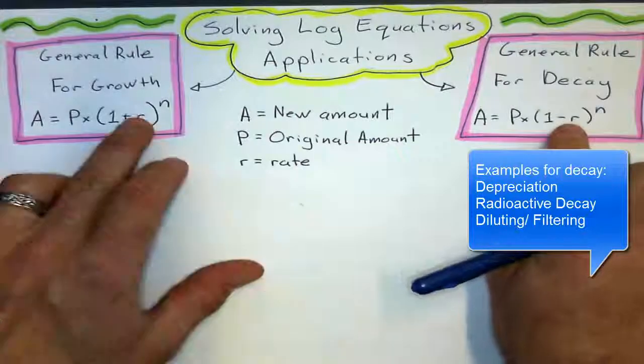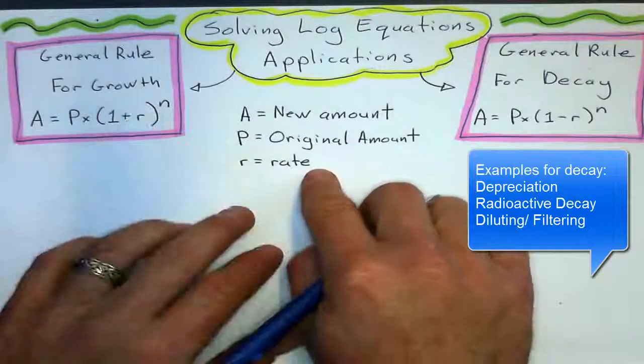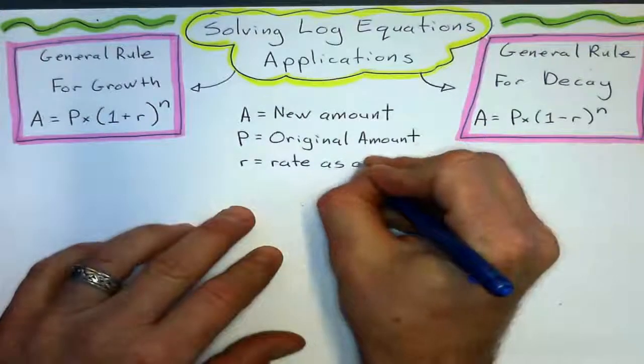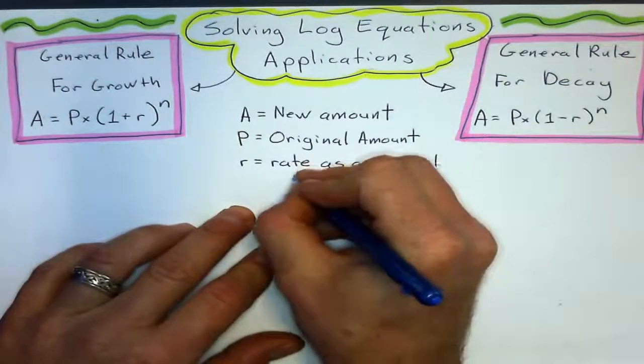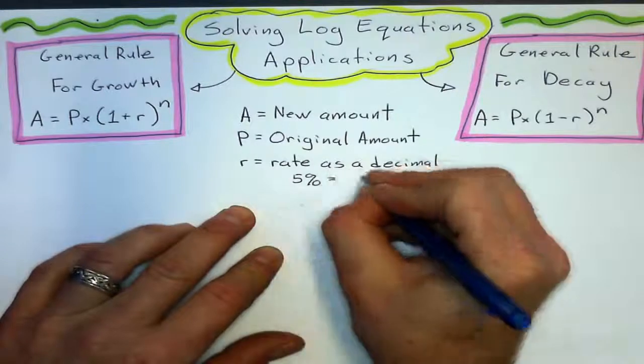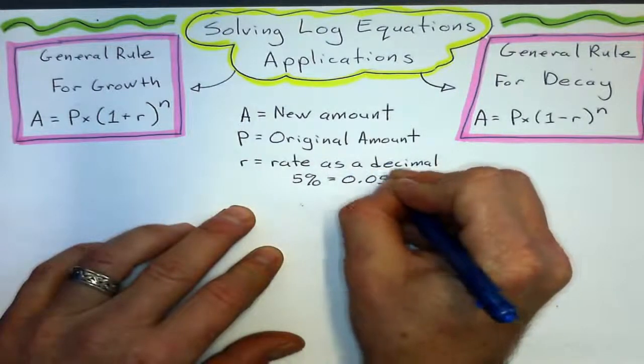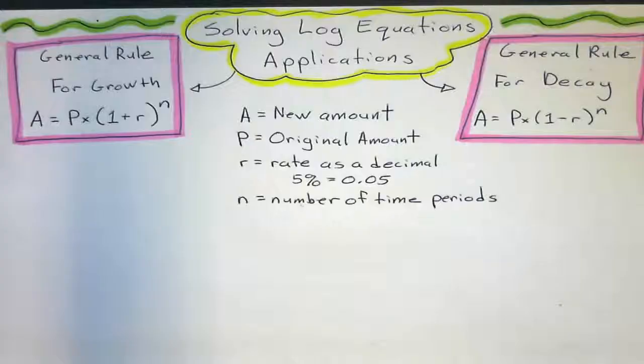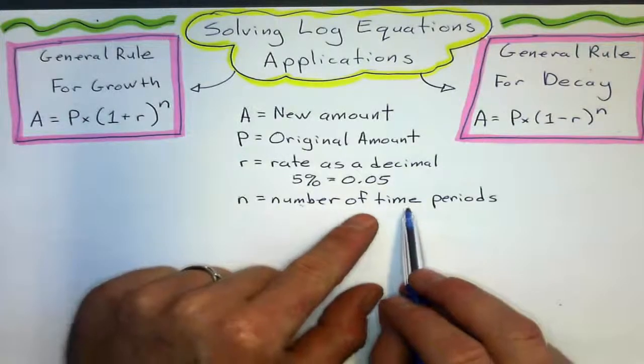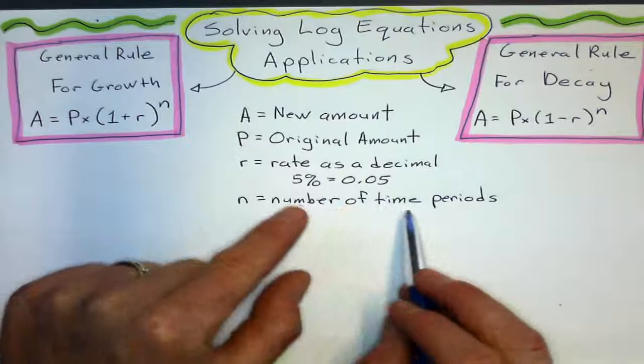R is going to be the growth or decay rate, and when you plug it into the formula, we don't want it as a percent, we want the rate as a decimal. So, for example, 5%, we'd write that in as 0.05.